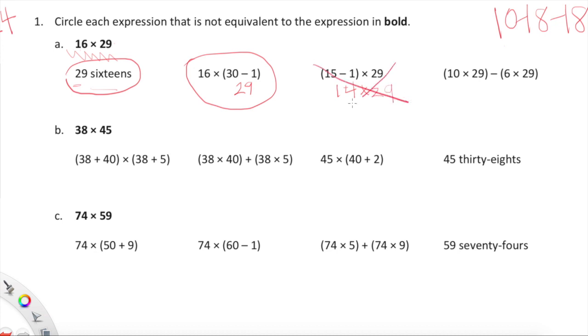Here is the difference between 10 twenty-nines and 6 twenty-nines. 29 times 10 is 290 minus 6 times 29. I'm going to say no on that one.